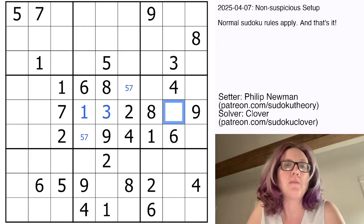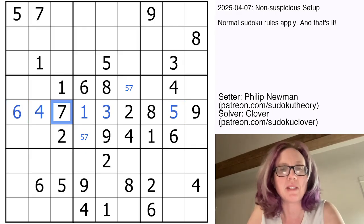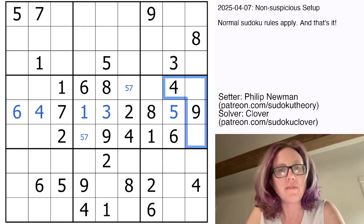I need a 4, 5, and 6 in this row. Because there's a 4 and 6 here, that's going to be a naked 5. There's a 6 here, giving me a naked 4. And that is going to be my 6.